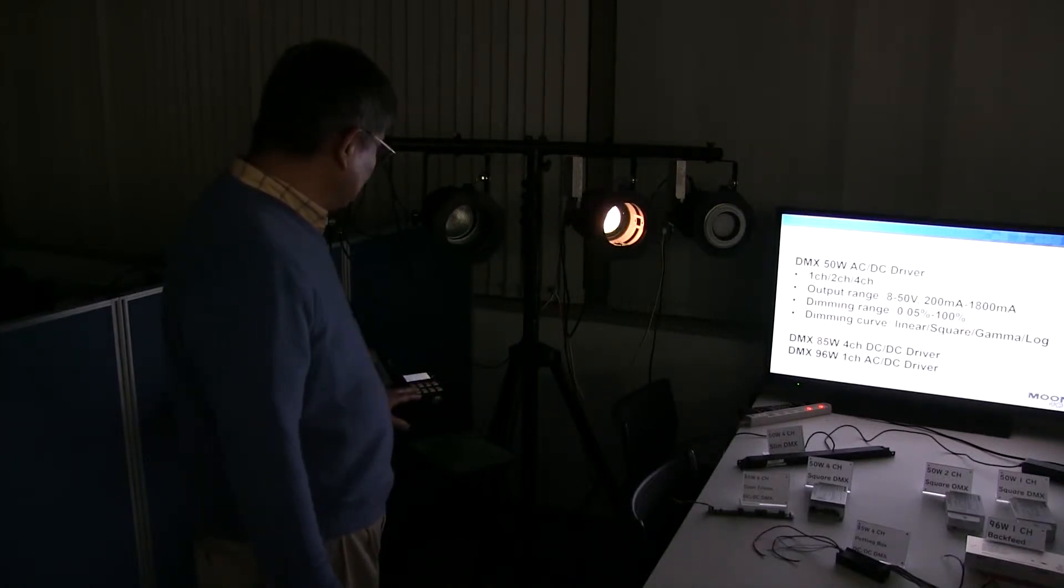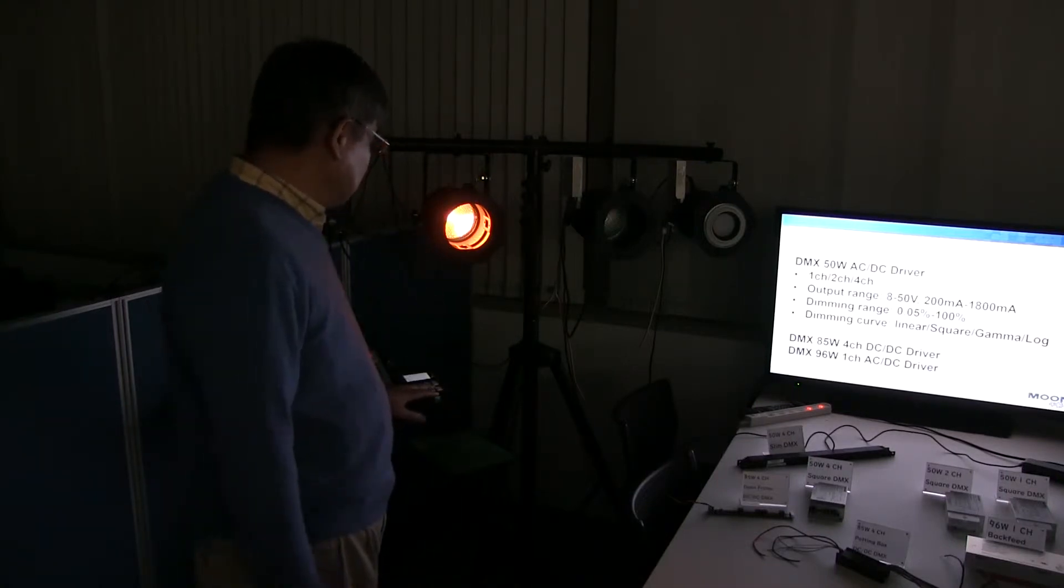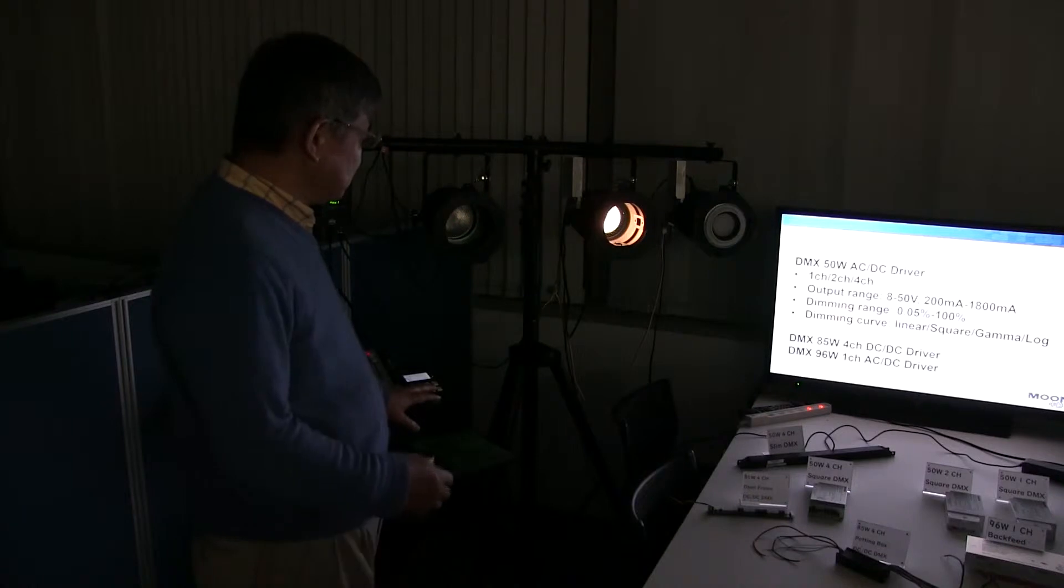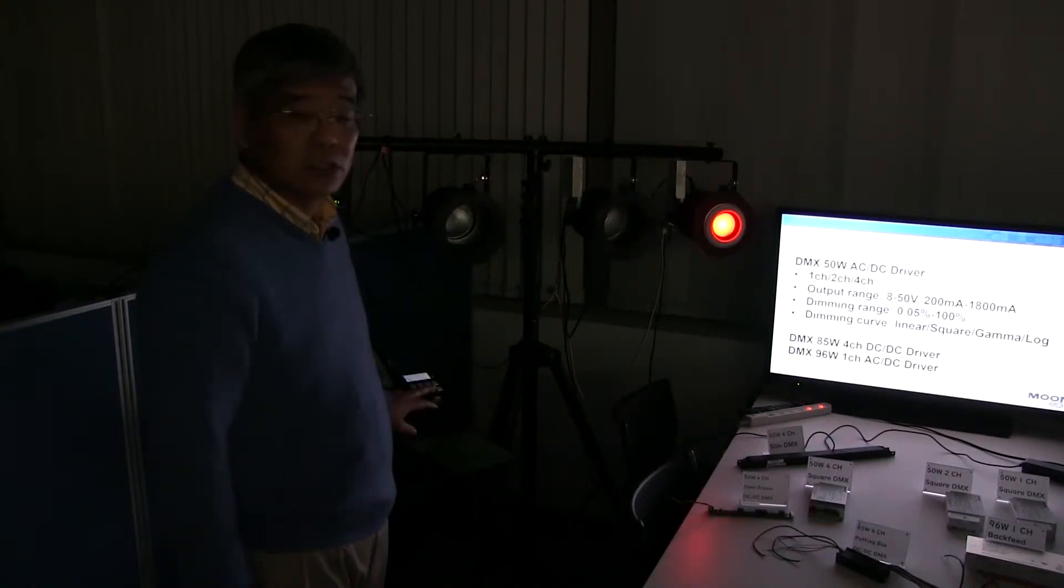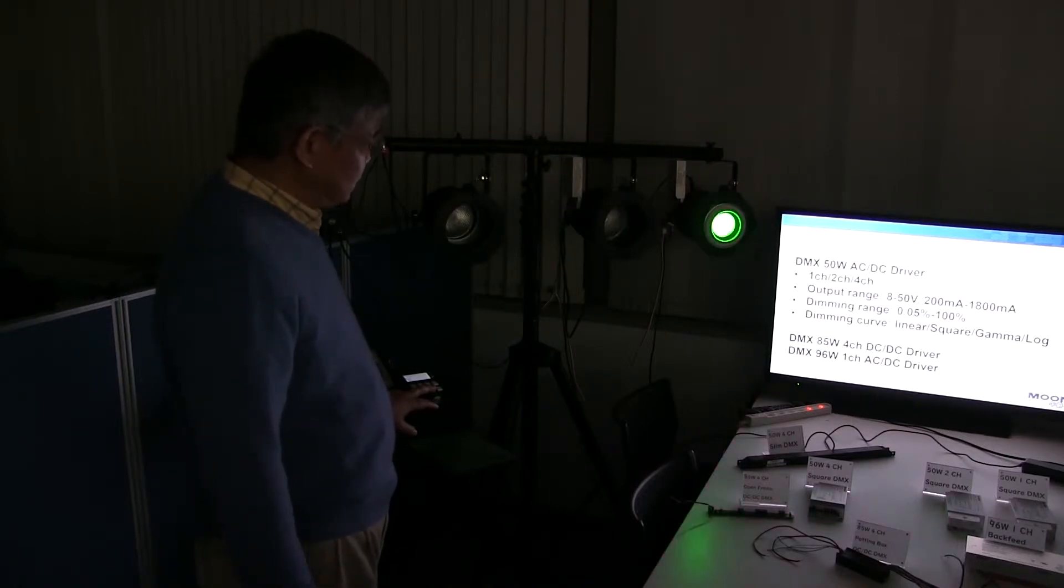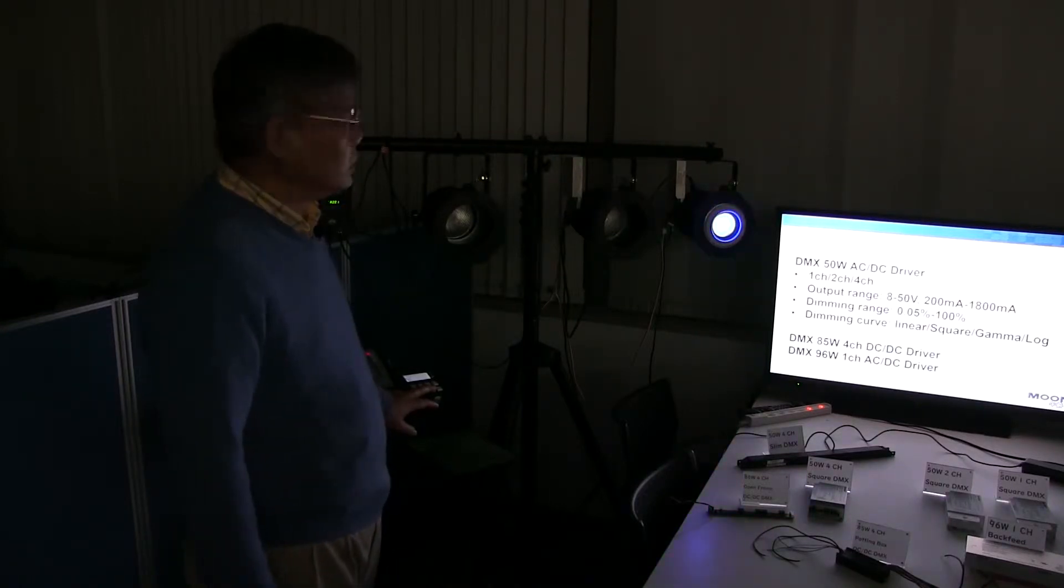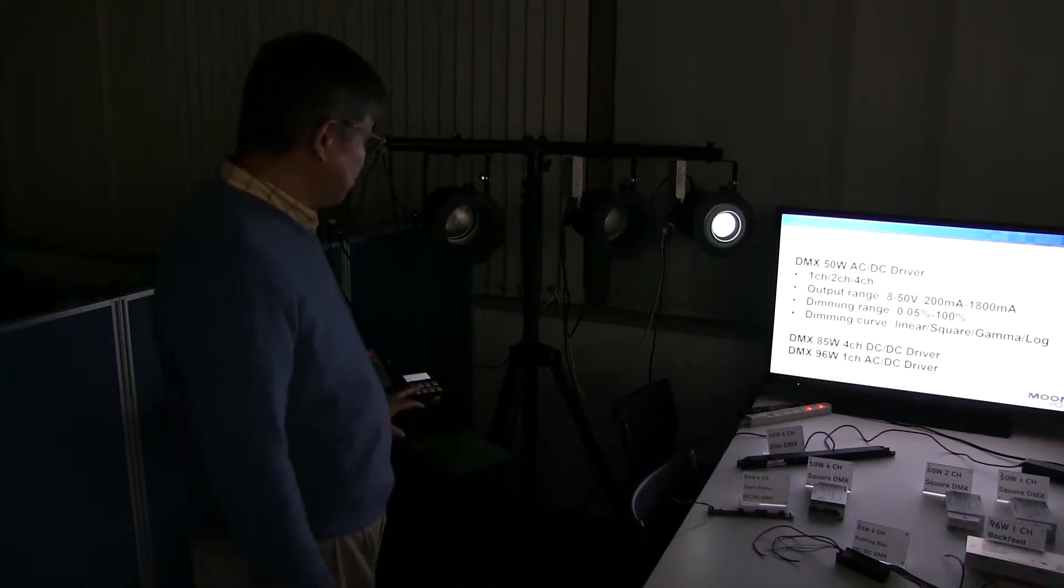We switch to first address, and halogen lamp is on. When we switch to second address, the LED lamp is on. Now is the demonstration of the RGBW quad channel power supplies. This is a 4 color lamp. R, G, B, W. W is stand for white.